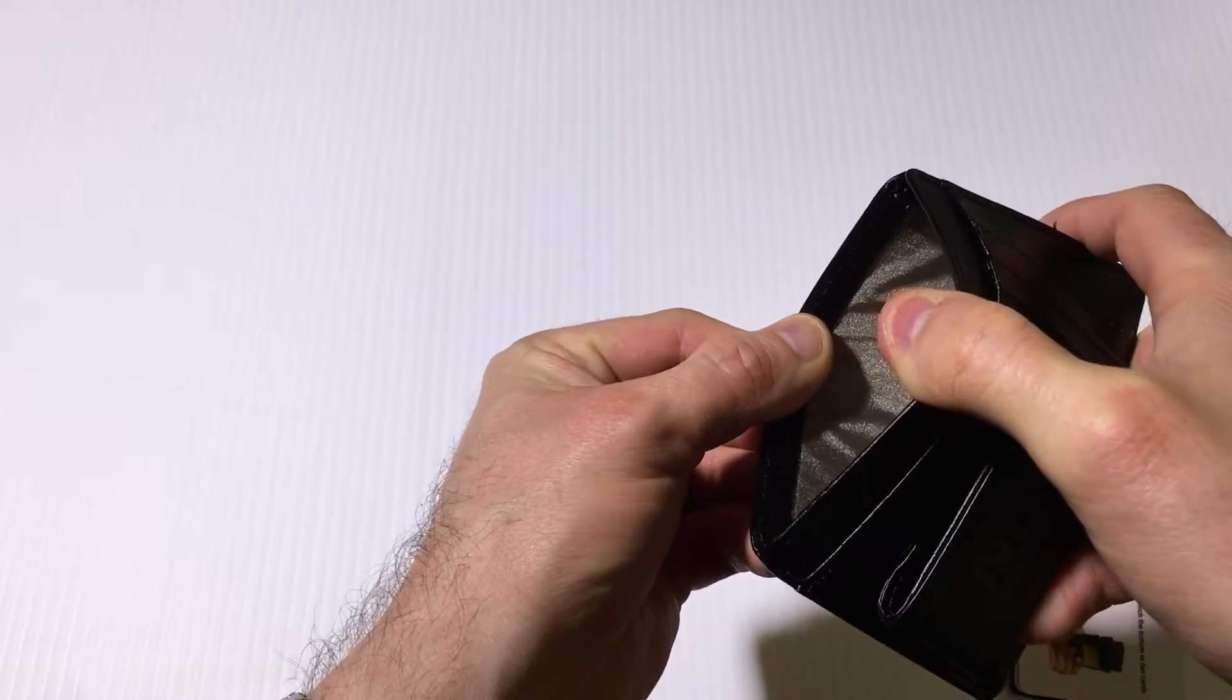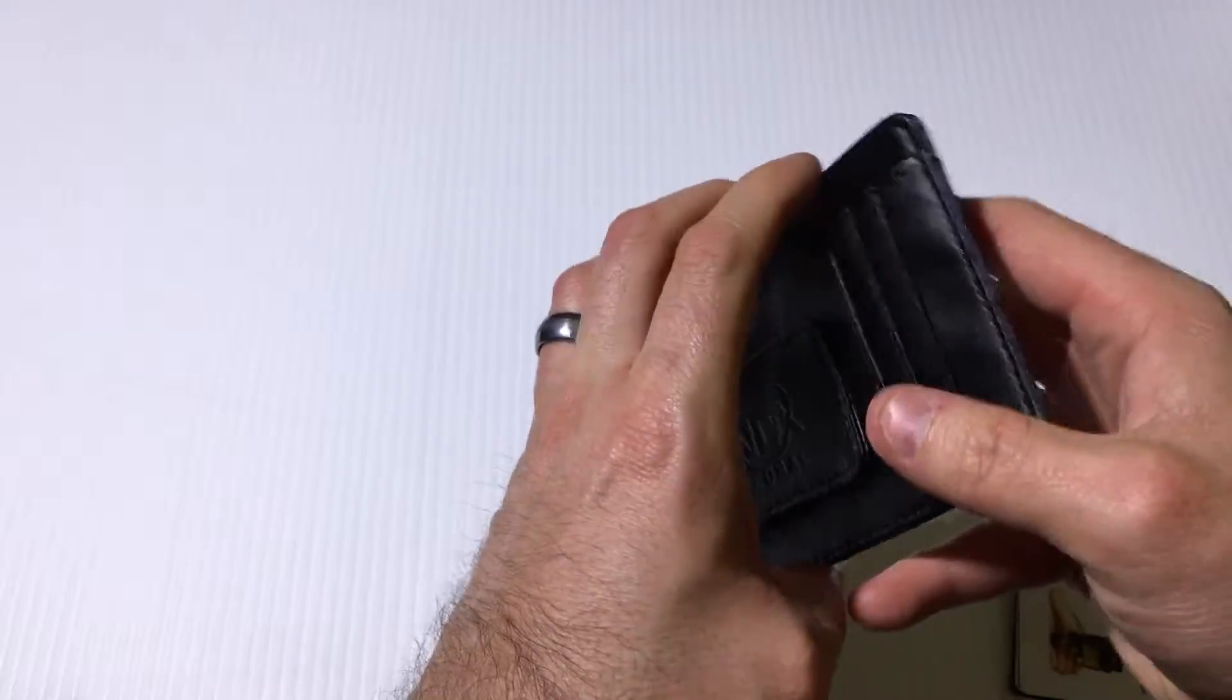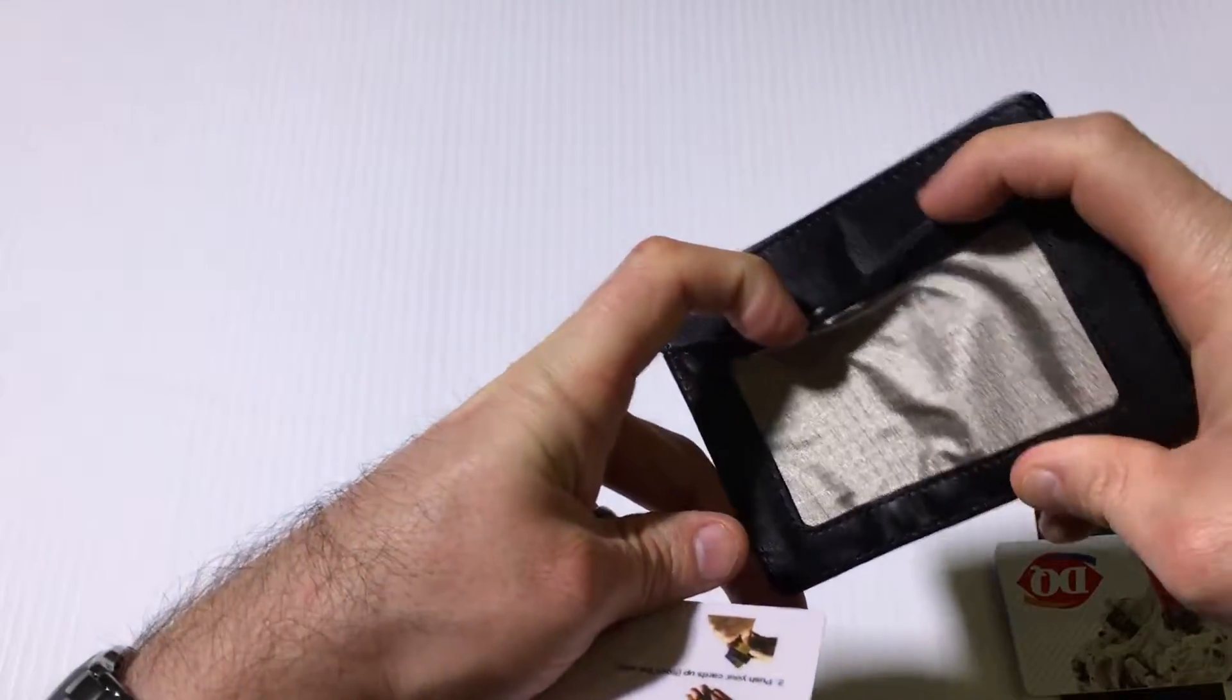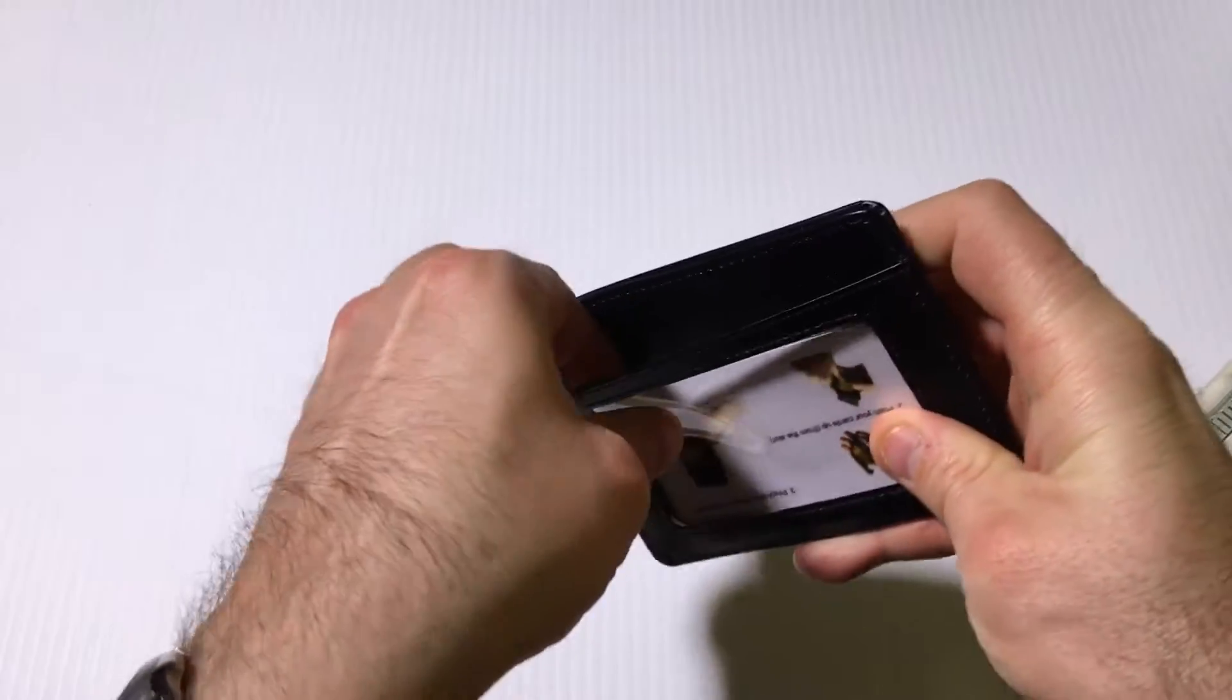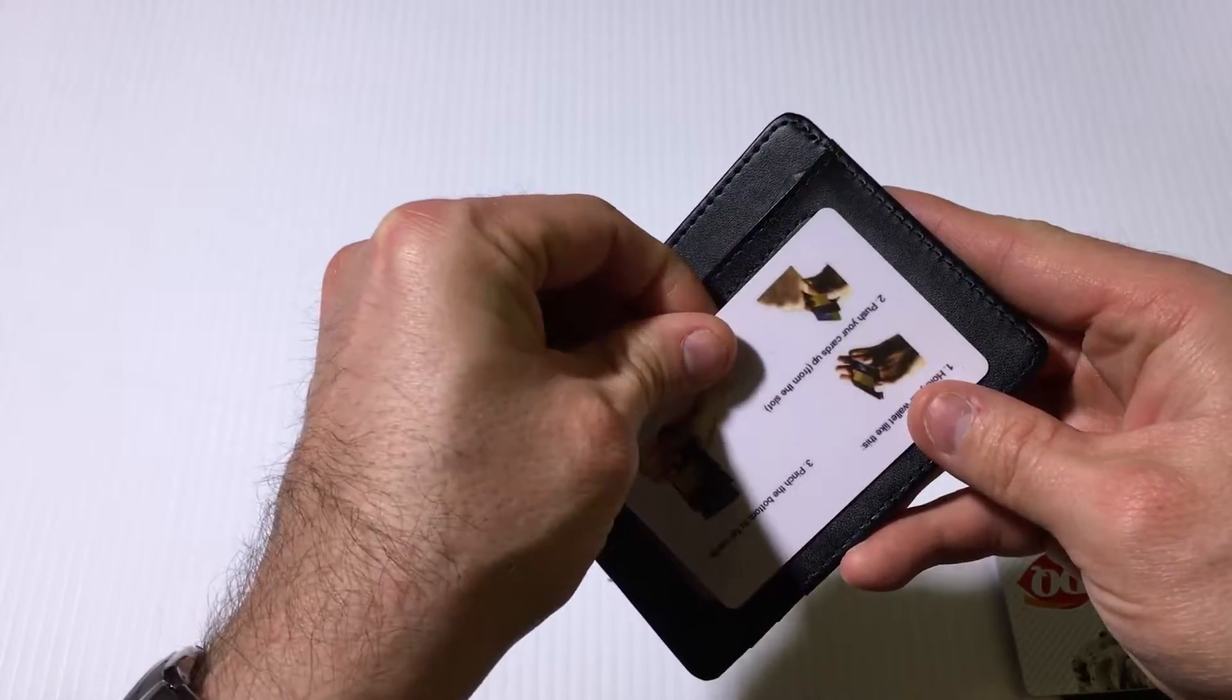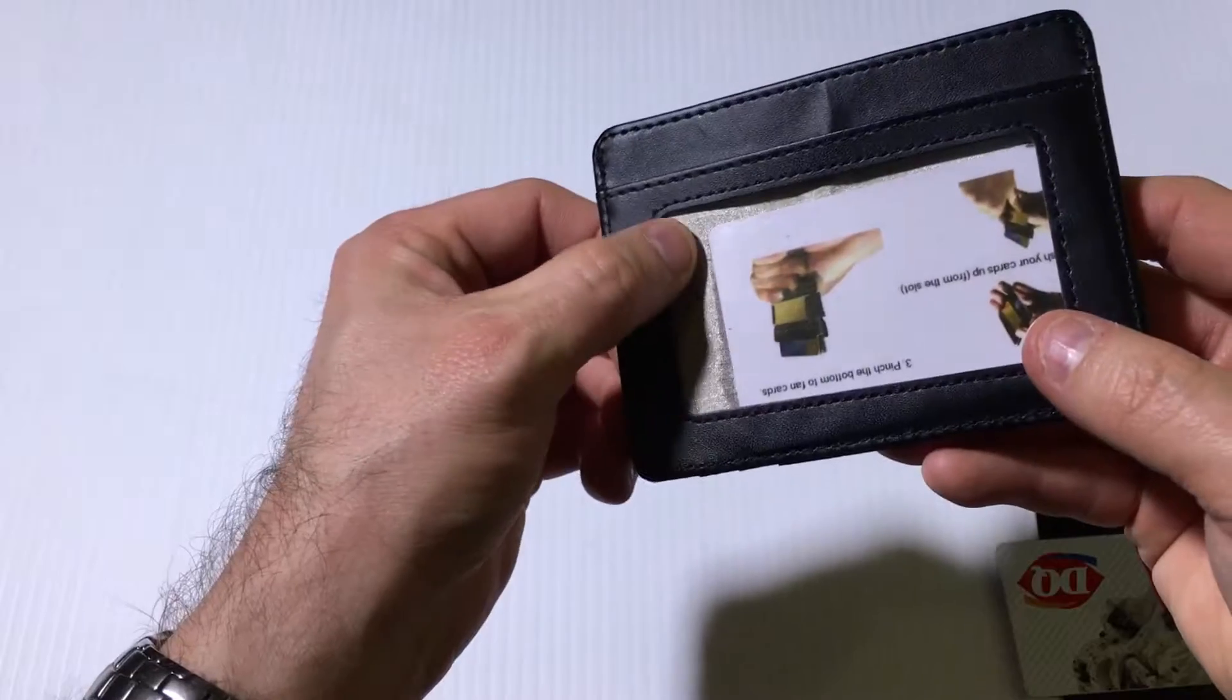You can see it has the RFID blocking foil in each slot. Now, some of the things I don't really care for about this wallet: first off, the photo ID slot here is just so big. I mean, there's just a lot of extra room. I prefer a photo ID slot to fit tightly so that the ID stays perfectly displayed. Like here, it could fall over into the corner and then you've got all this extra space. Not really a big fan.